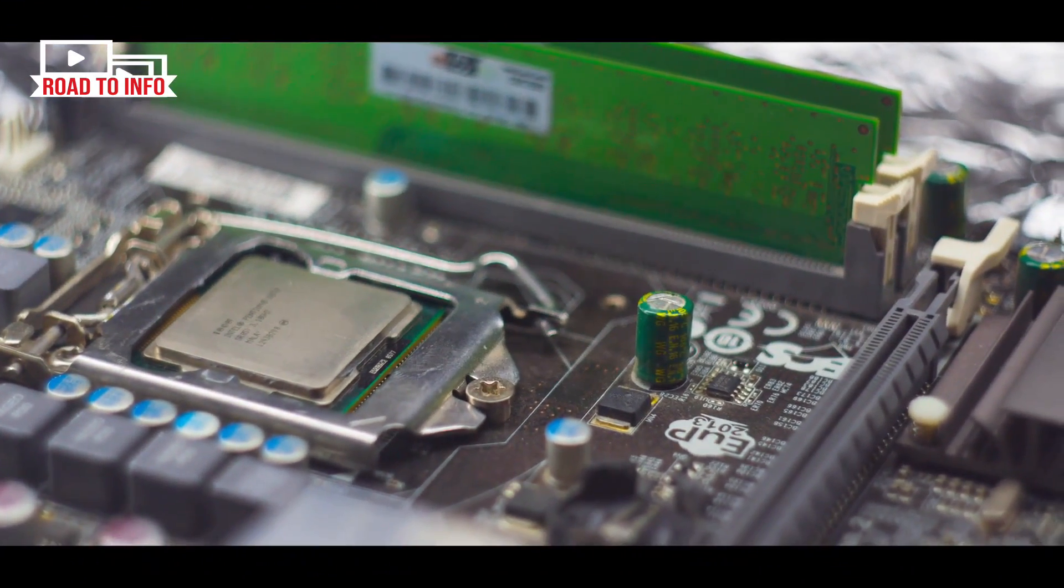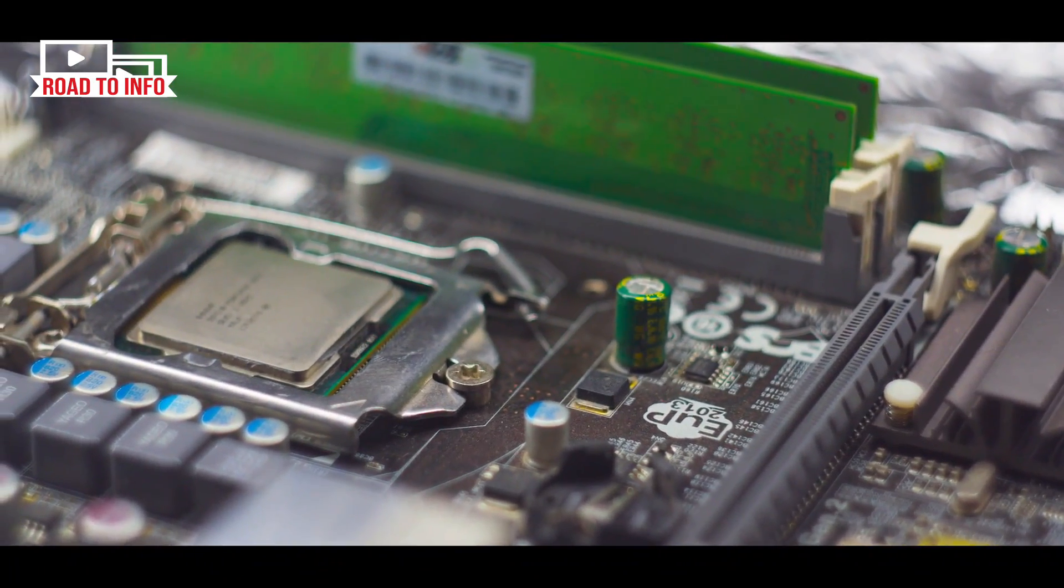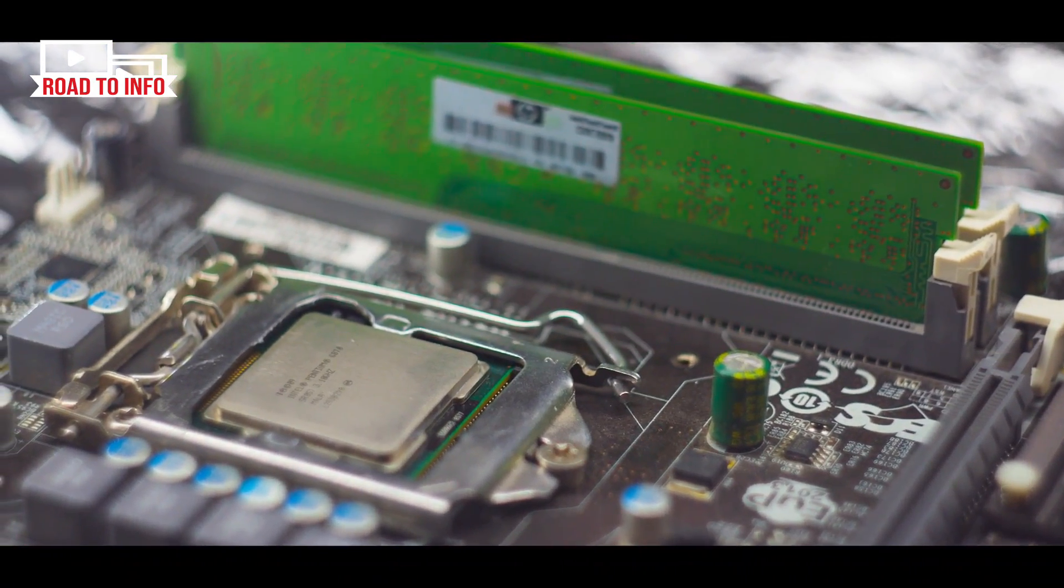Number 1: RAM is a type of volatile memory that stores data temporarily and is erased when the power is turned off. It is used for running programs and applications on a computer.